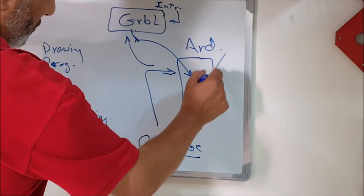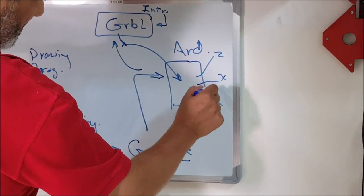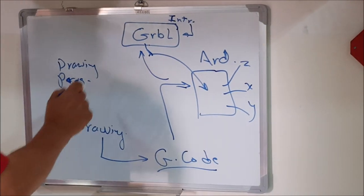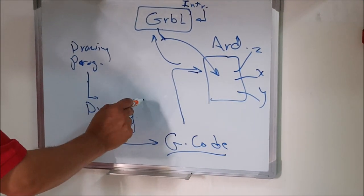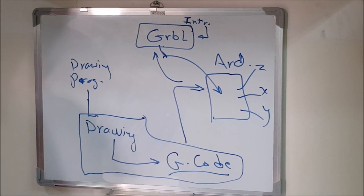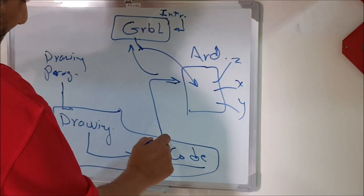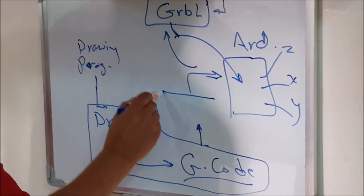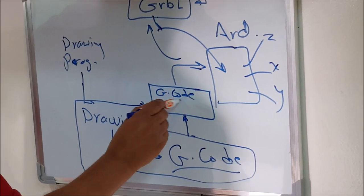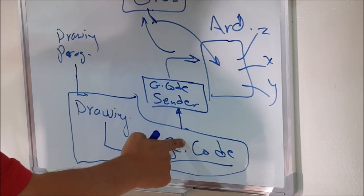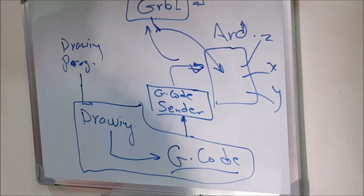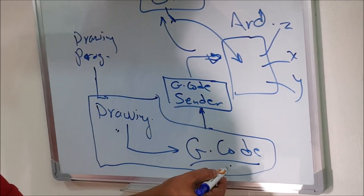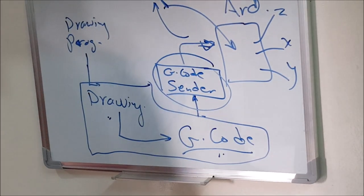The Arduino, with the assistance of GRBL, interprets the G-code and sends the commands to the X, Y, and Z stepper motor controllers. Now, some programs do the drawing and generate the G-code, but to actually send that G-code to the Arduino, we need another program — we call it a G-code sender. Some programs only do drawings and generate G-code, while others do all three.